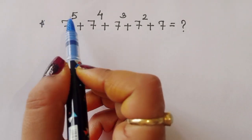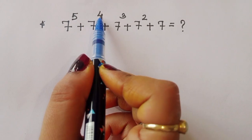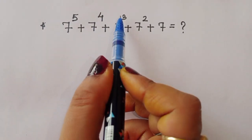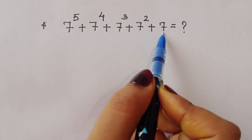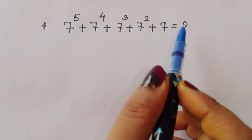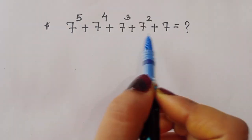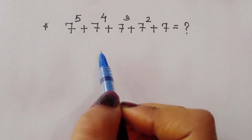We are given 7 power 5 plus 7 power 4 plus 7 power 3 plus 7 power 2 plus 7. We have to find out the value of this term. Let's see how we can find it out.